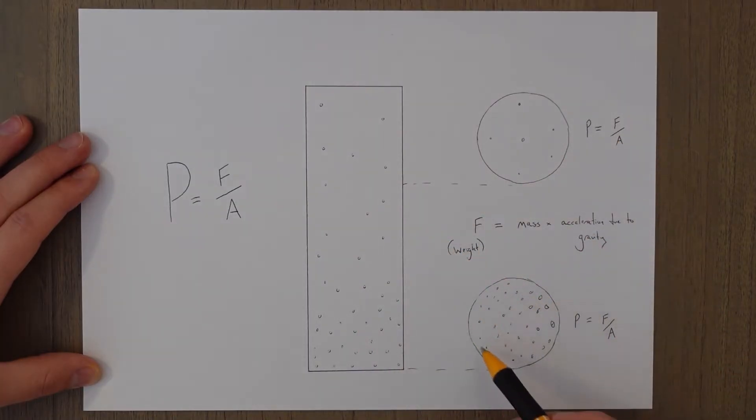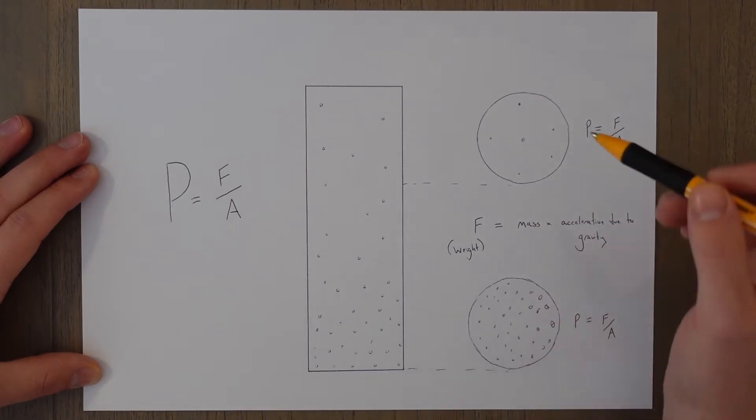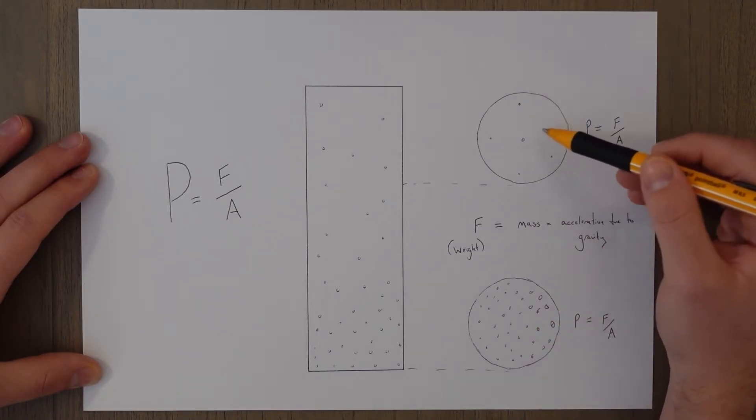So if we look at this section of air down near the surface, it has a larger amount of air particles pushing down on it when you compare that to this section of air up near the top.